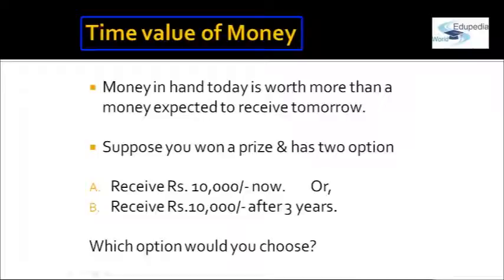Let's say you won a prize of rupees 10,000. Do you want to receive it today or after three years — which option would you choose? If you are a rational investor, you will say give me my 10,000 rupees today, because you have the option to invest this 10,000 for three years and multiply that amount. So there is a certain opportunity cost attached to receiving money today versus in the future.